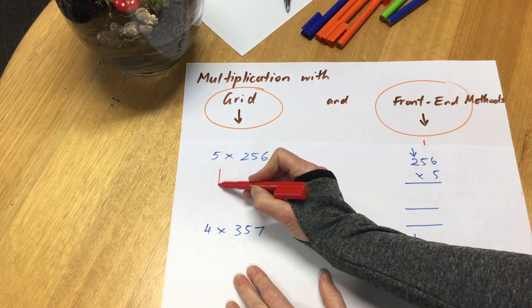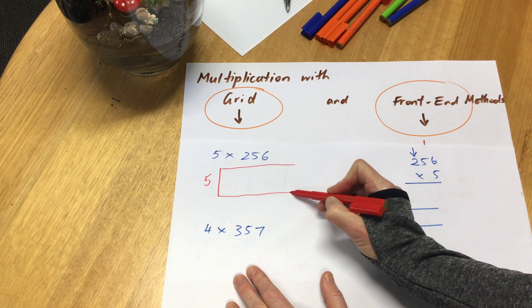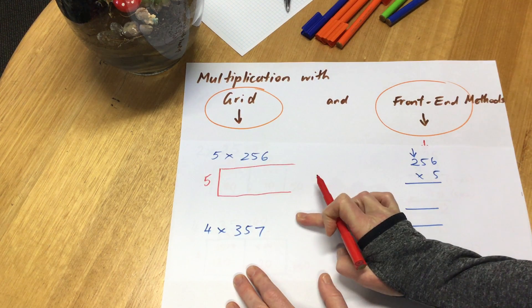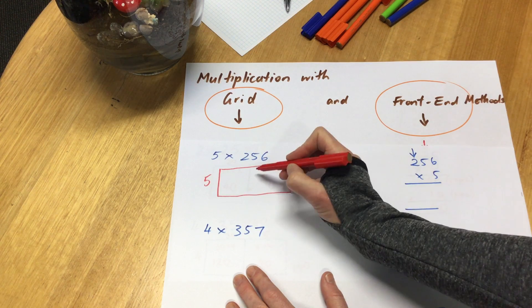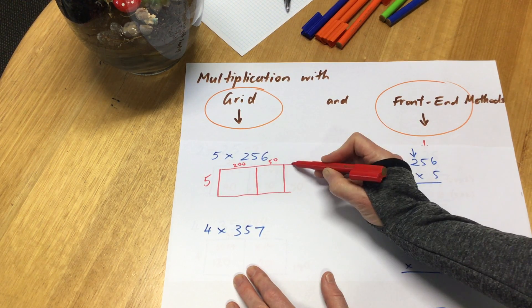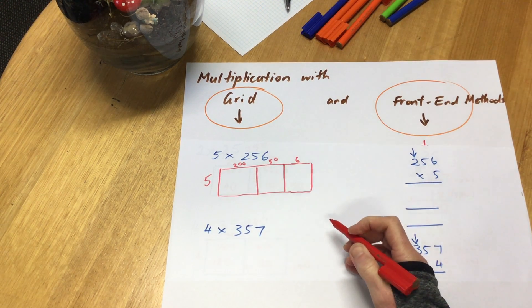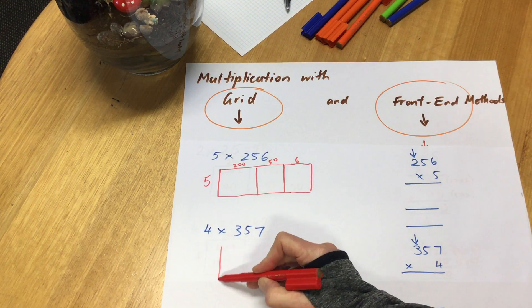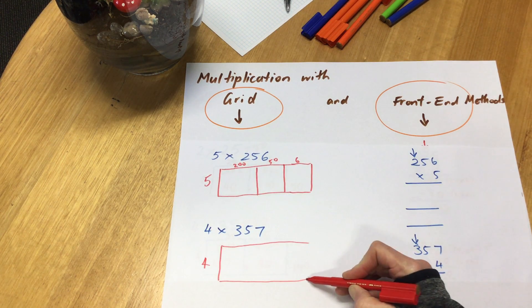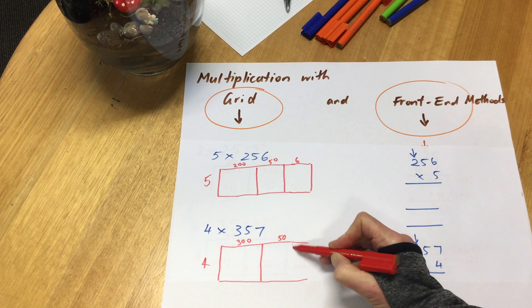First of all, in my grid method, I have to draw up my grid. Now the grid is as big as I need it, so I've got one digit here so I only need one row. If I had two digits, I would need another row, but at the moment I've just got a single digit. Over here I've got 200 and 50 and 6, so I need 3 boxes, 3 columns. The one underneath that I'm going to draw, I've just got one digit, so I just need one row. I've got 300 and 50 and 7.